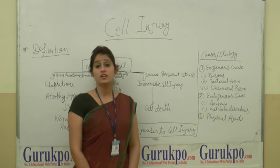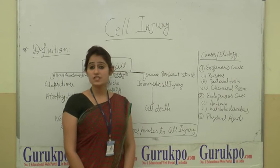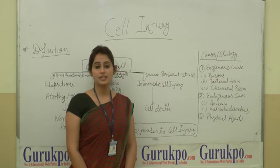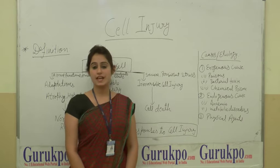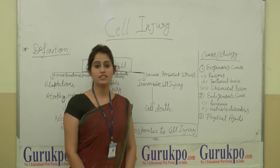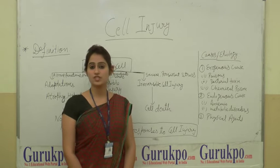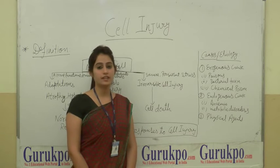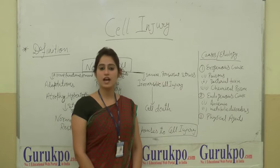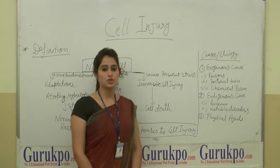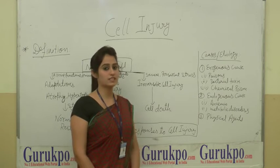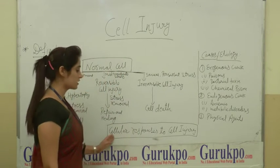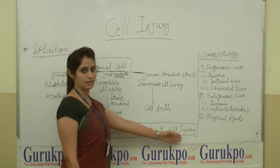What is Cell Injury? Cell Injury is defined as a variety of stress that a cell encounters as a result of changes in its internal and external environment. Now we will see the cellular response to cell injury.